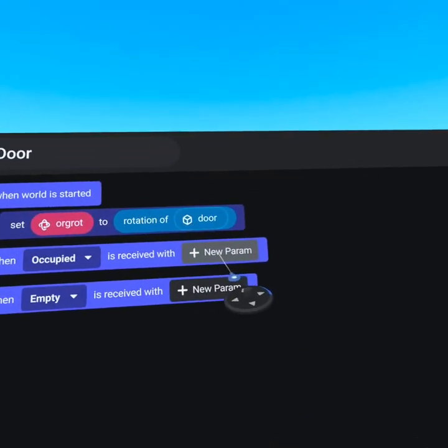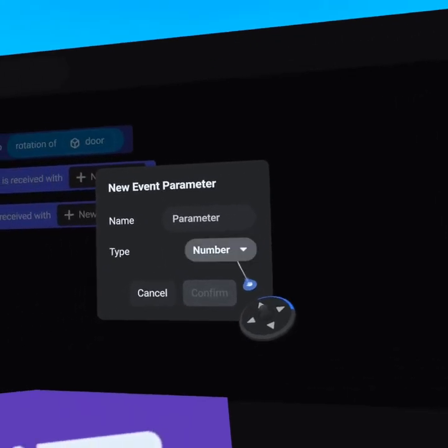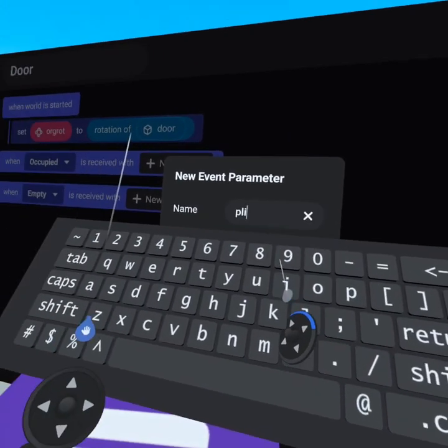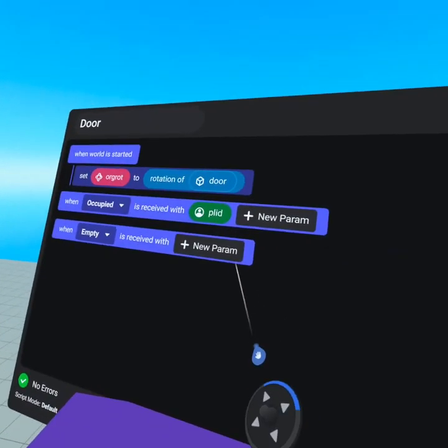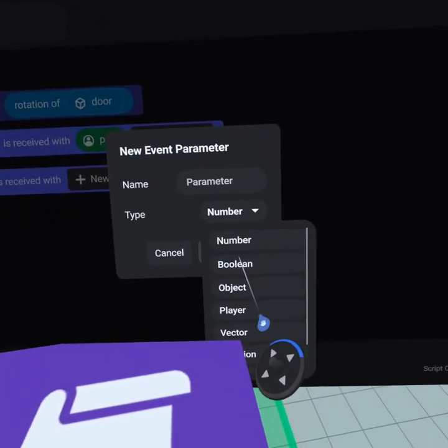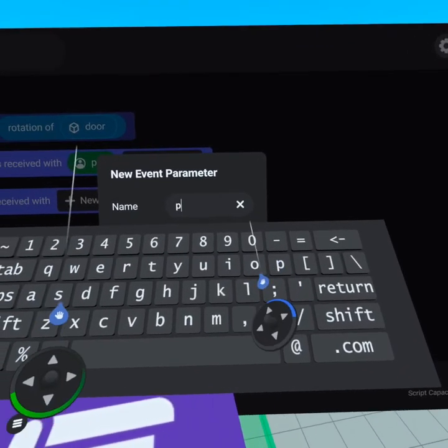Because this is received with the player ID, we do need to click new parameter, go drop down for player and type in PLID. That's because when a trigger is entered it is entered with a player ID. We'll go ahead and fill that out.